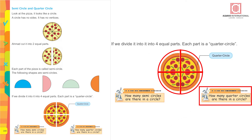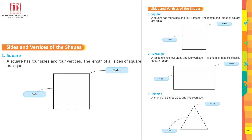Sides and vertices of the shapes: look at the square. A square has four sides and four vertices. The length of all sides of a square are equal. How many sides are there in a square? There are four sides. And how many corners — that means vertices — are there in a square? Yes, four sides and four corners.